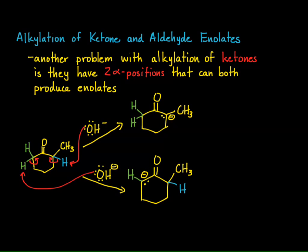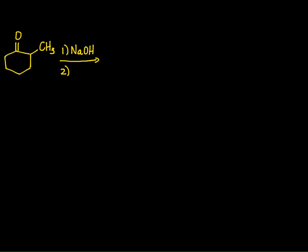These are two different types of enolates, and of course both can react with an alkyl halide. On top of that, once alkylation occurs, we can form more enolates because there is an excess of base present.